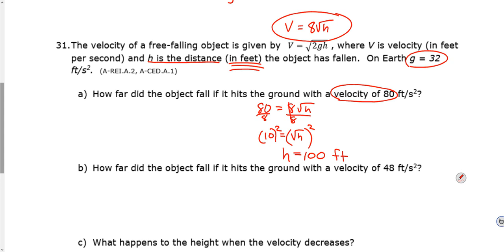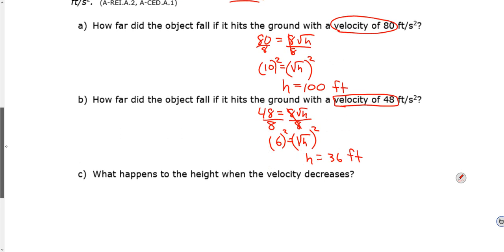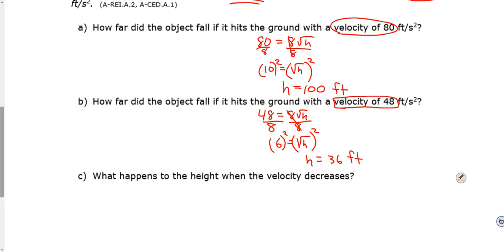How far did the object fall if it hits the ground with a velocity of 48? Same thing. It's just that this time they want us to put in the velocity as 48. So if V equals 48, you get 8 radical h divided by 8 first. Same exact steps. So you have radical h equals 6. And then you have to square it. Square that. So that means h equals 36. And again, this is in feet because h is always measured in feet in this problem.